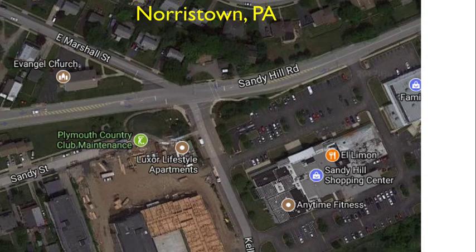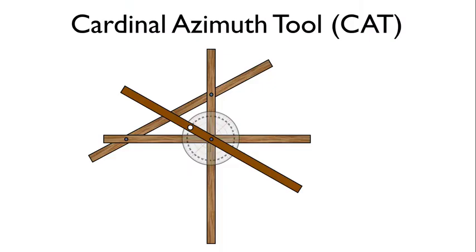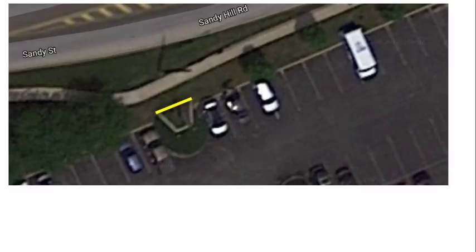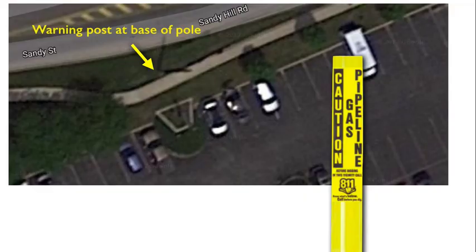Here's where I made my sunset recording in Norristown, Pennsylvania. I was facing west. The main focus of my video was the cardinal azimuth tool, and while working with that tool I just took a couple photos of the setting sun, maybe about an hour apart, so I could do this analysis. Very nearby was a telephone pole with a warning post, and I rested my camera on top of that post.